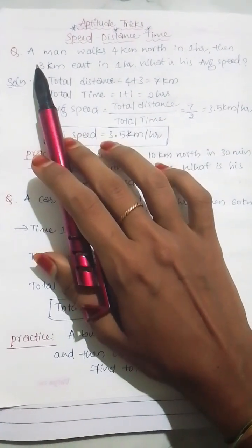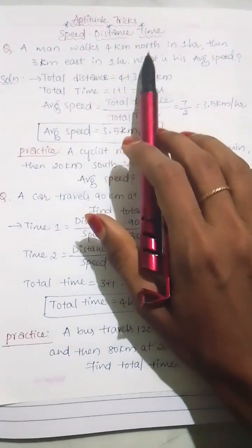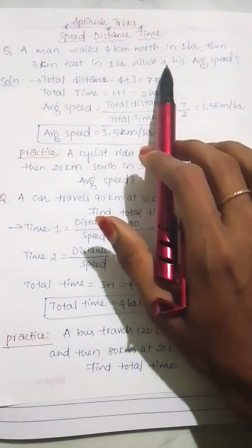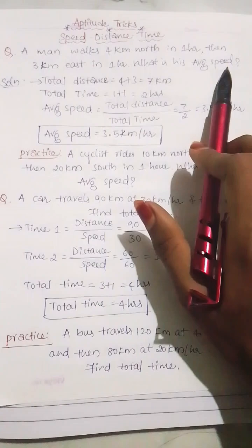Let us start with an example. A man walks 4 km north in 1 hour, then 3 km east in 1 hour. What is his average speed?